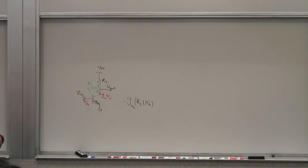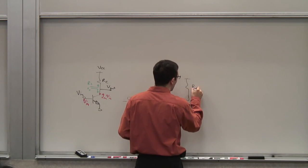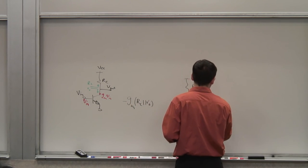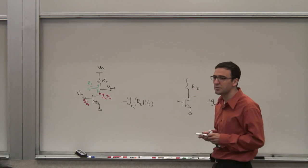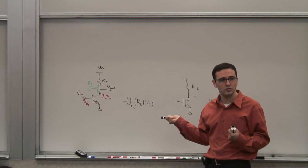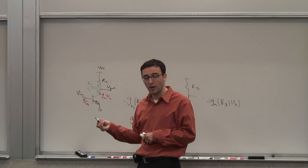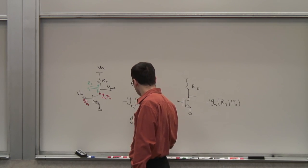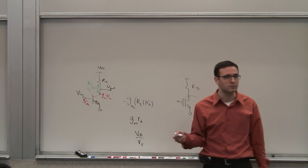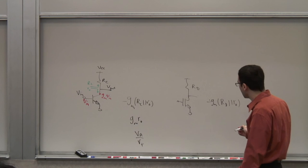RC could be a standard resistor, the output of a current source, or various other things. Similarly for a MOSFET common-source stage, you have a gain of minus gm·RD in parallel with RO. The maximum intrinsic gain of this device is not infinite — even if you set RC or RD to infinity using an ideal current source, you're still limited by gm·RO. For a bipolar transistor, gm·RO equals VA over (kT/q) — the Early voltage divided by the thermal voltage — and that ratio was the maximum gain from a basic common-emitter stage.